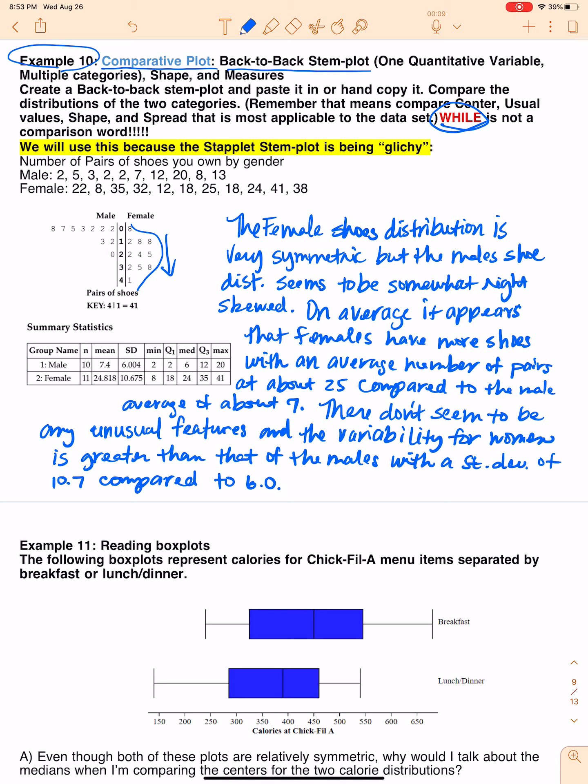All right, so let's go back over this. The female shoe distribution is very symmetric, but the male shoe distribution seems to be somewhat right skewed. On average, it appears that females have more shoes with an average number of pairs at about 25 compared to the male average of about seven. There don't seem to be any unusual features. And the variability for women is greater than that of the males with a standard deviation of 10.7 compared to six. Oh, it's divine, it's beautiful people. I mean, we had a few hiccups along the way, but that is essentially how you compare two distributions.